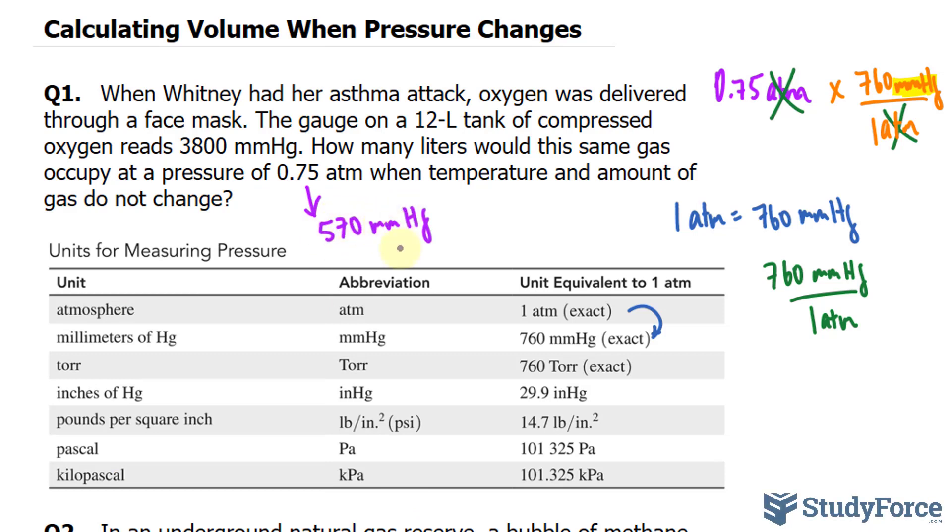Now, the relationship between volume and pressure, according to Boyle's Law, is that volume and pressure are inversely proportional. So we can write down mathematically that volume is equal to a constant K times 1 over P. They're inversely proportional. Notice that this is 1 over P and this is V over 1, essentially. So to find the change in volume, we use the formula V1P1 is equal to V2P2.